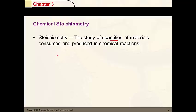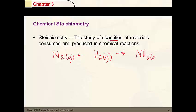Let's say that we have this chemical reaction. We have nitrogen gas reacting with hydrogen gas, and it produces a substance called ammonia. One of the first things you have to do in stoichiometry is be sure that you know how to balance equations.